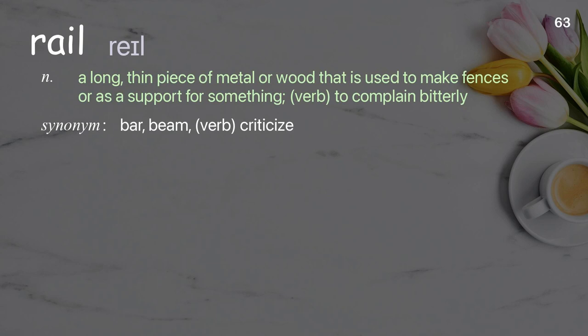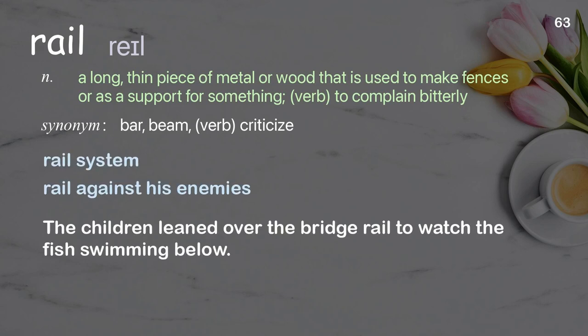Rail: a long, thin piece of metal or wood that is used to make fences or as a support for something; verb — to complain bitterly. Examples: rail system, rail against his enemies. The children leaned over the bridge rail to watch the fish swimming below.